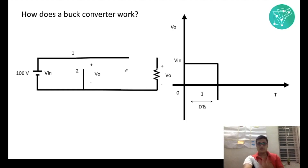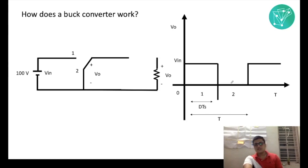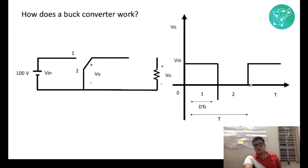So for the time period D·Ts, where D is the duty cycle, the output voltage is measured as 100 volts, which is V input. Now when it goes to the second part — position 0.2 — the switch is not connected to the input voltage terminals, so the output voltage is actually 0 volts. As you can see in the waveform, the output voltage shows 0 volts.